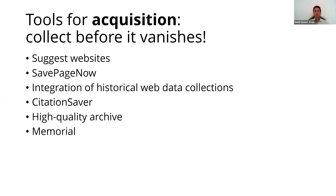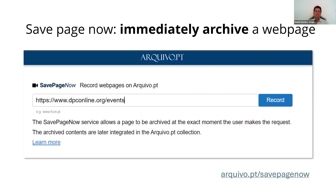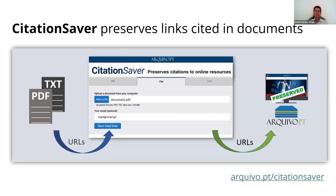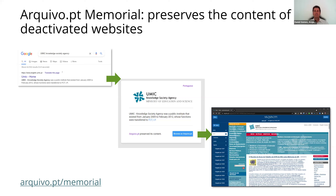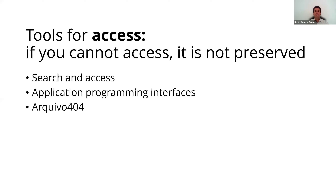I will now briefly present some of the tools available on the catalog, starting with the tools for acquiring digital objects published online. For example, SafePage enables users to immediately archive online content. CitationSaver extracts links cited in documents and preserves the referenced content so that citations may remain valid across time. The Archive.pt memorial preserves the content of historical websites so that they may be deactivated by their owners and save resources.